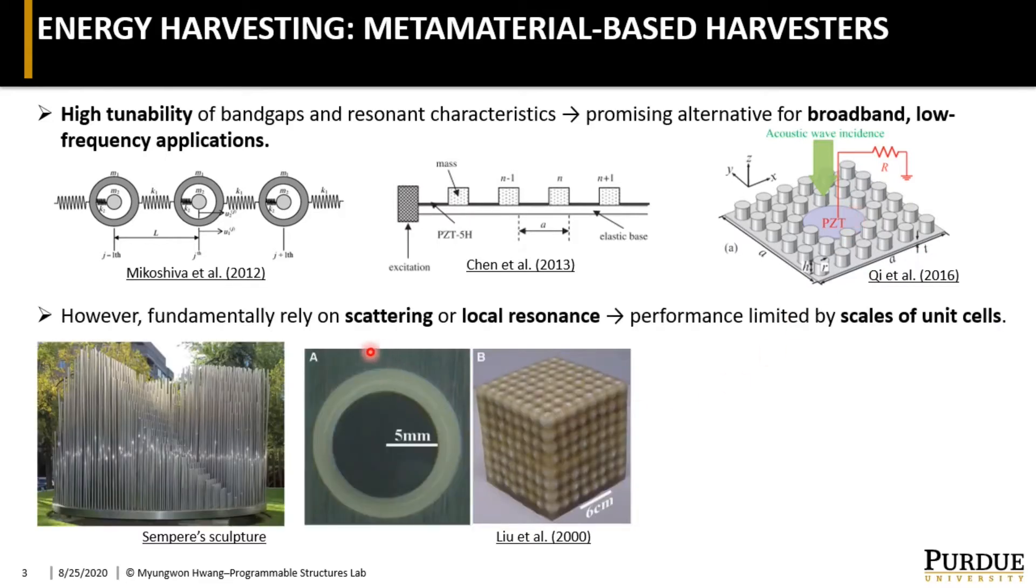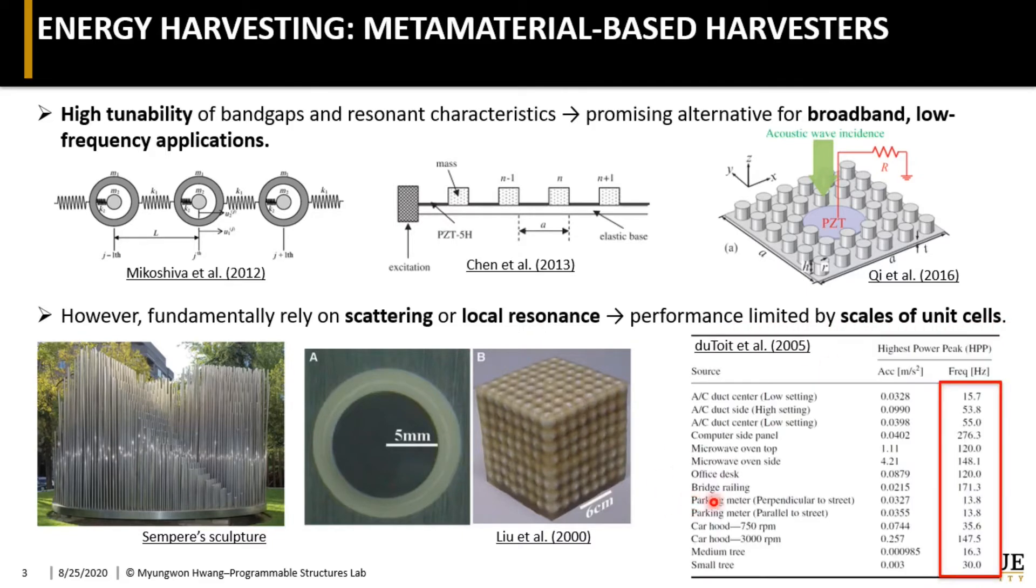However, the band structure of the metamaterials fundamentally rely on the scattering or local resonance, so that their performance is still constrained by the physical size of the unit cells. As can be seen in this summary table, the frequency of the typical ambient source is between 10 to several hundred hertz. So for the metamaterial-based energy harvesters to optimally operate in this range, the harvesters have to be designed impractically large.